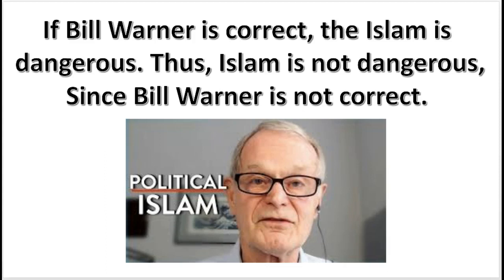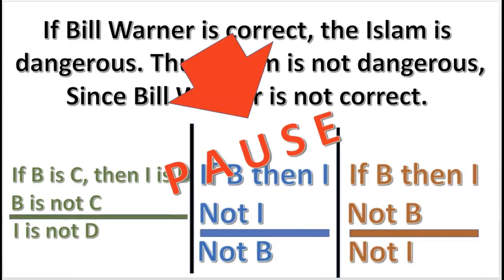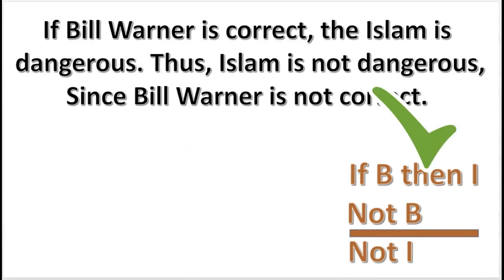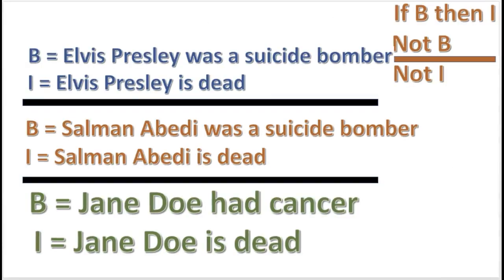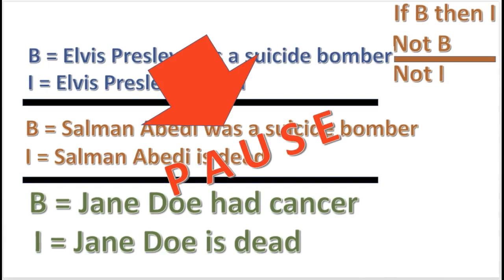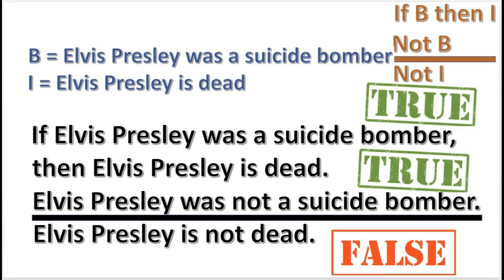Here's another practice problem. What is the form of this argument? Notice that B and I represent whole statements. What set of substitutions proves this form invalid? This set of substitutions makes the premises true and the conclusion false.